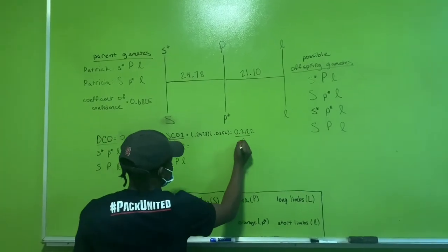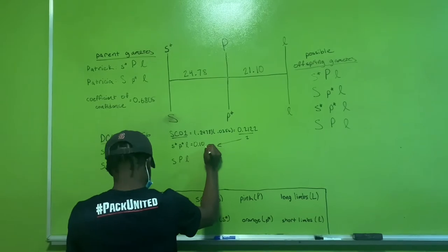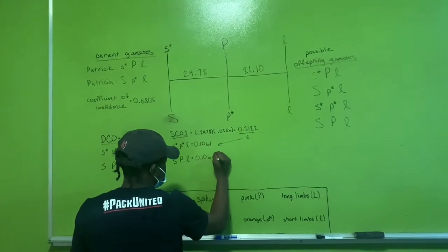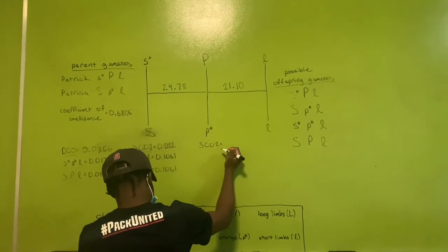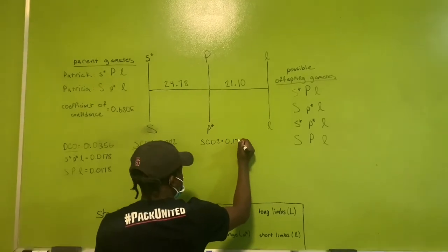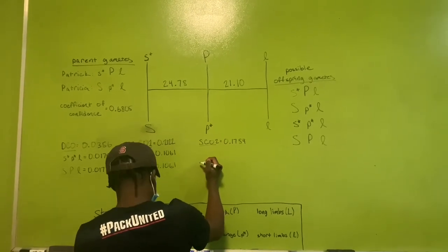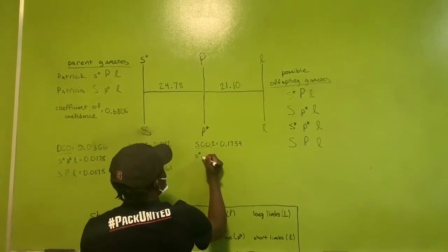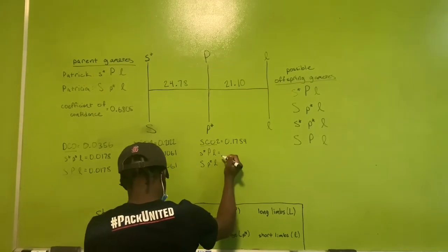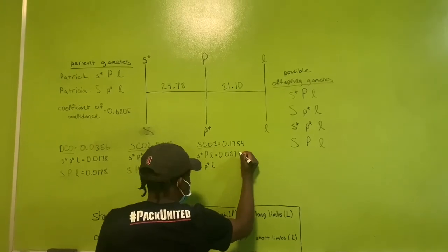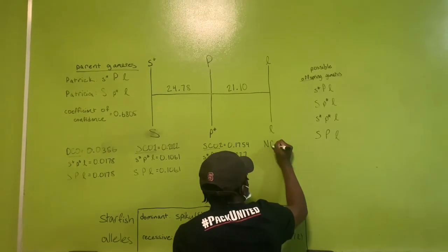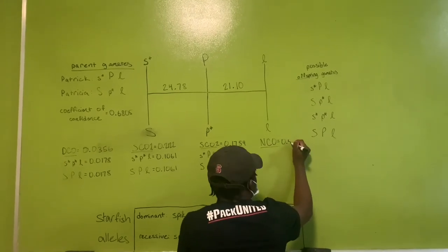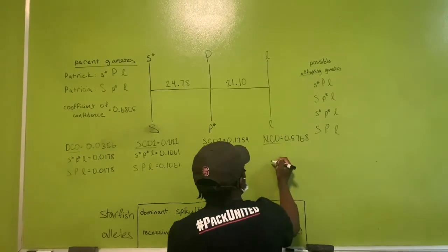Calculating the chance of a single cross at position two is the same process as position one, but instead of using the r1 value, you use the r2 value and multiply it by the value of the double cross event.